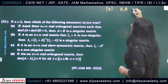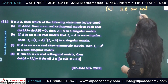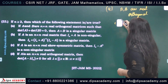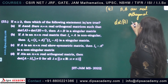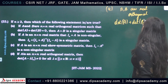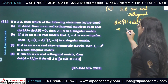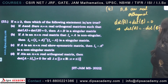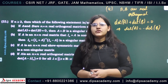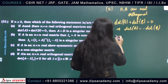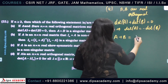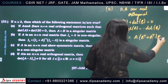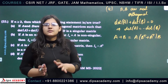So A and B are real orthogonal, and det(A) + det(B) = 0, which implies det(A) = −det(B). Also, when we have two orthogonal matrices, we can write the sum A + B = A·B^T + A^T·B. Since these are orthogonal, their transpose equals their inverse.